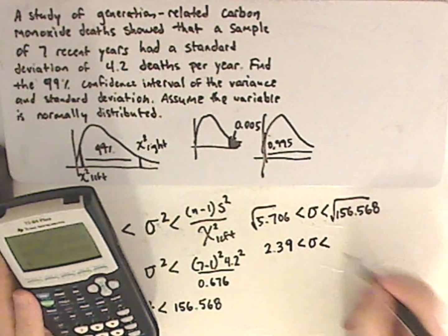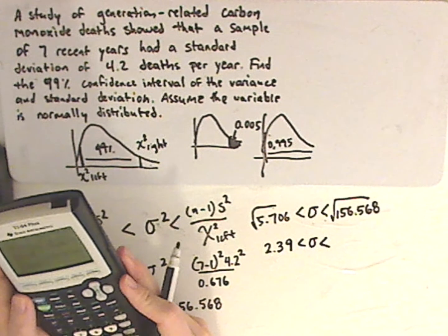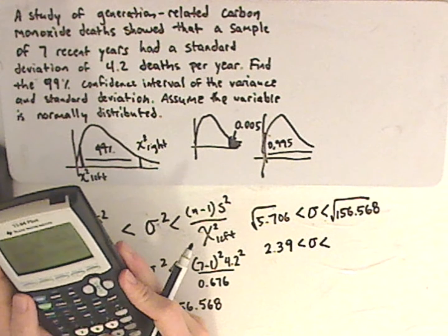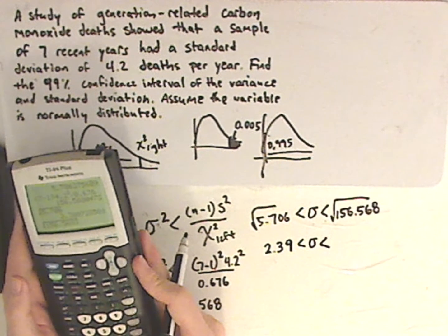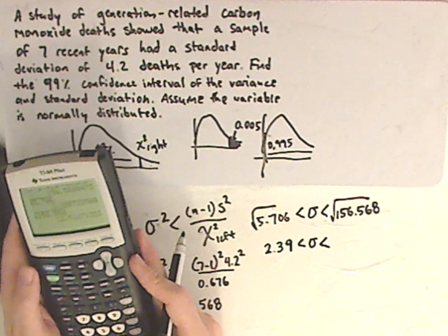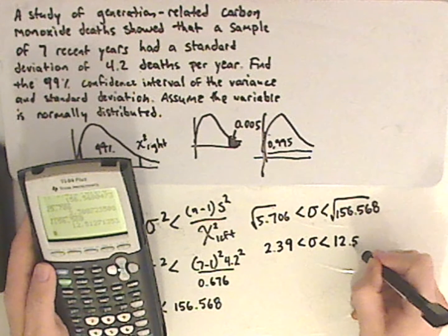And then for this, it would be the square root of 156.568, which gives me 12.51.